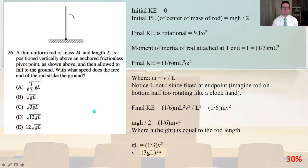Number 26. A thin, uniform rod of mass m and length L is positioned vertically above an anchored, frictionless pivot point as shown above and then allowed to fall to the ground. With what speed does the free end of the rod strike the ground? Our initial kinetic energy equals 0. The initial potential energy of the center of mass of the rod equals mgh over 2. Final kinetic energy is rotational. It equals 1.5 iω squared.